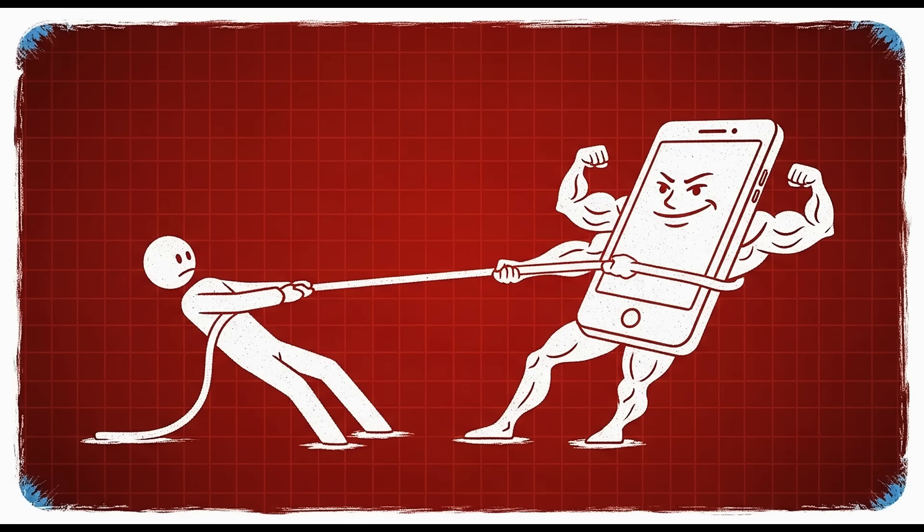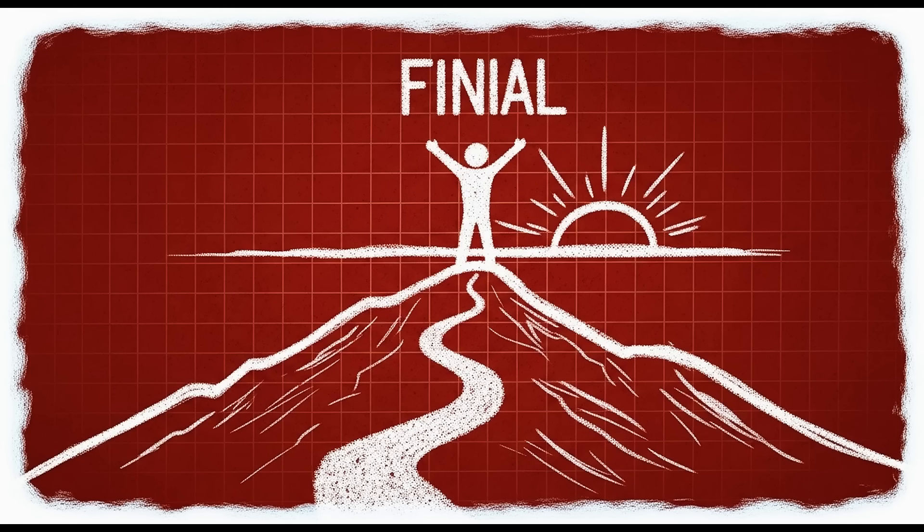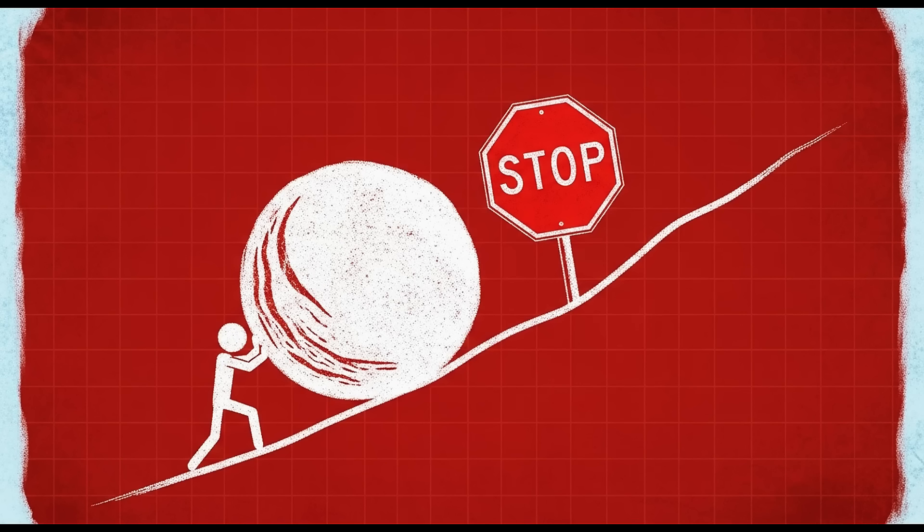Design your life so that the dopamine-rich activities require effort to access and the satisfaction-rich activities are effortless to start. Delete social media apps from your phone. Use website blockers. Put your phone in another room when you work. Make junk food inconvenient and healthy food convenient. Every barrier you put between yourself and distraction is a vote for the person you're trying to become.